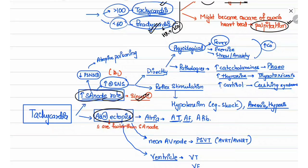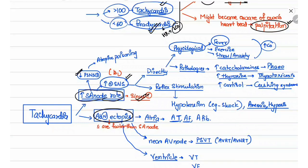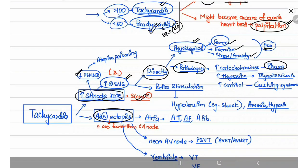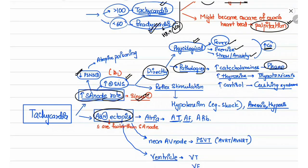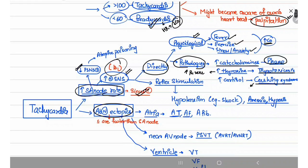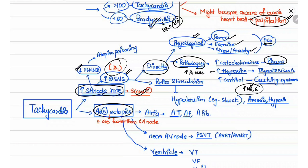Sinus tachycardia can occur due to increased sympathetic stimulation or decreased parasympathetic activity. Decreased parasympathetic activity can occur due to atropine poisoning. Increased sympathetic activity can occur in physiological conditions like fever, exercise, stress, or anxiety. In pathological conditions, it can occur in pheochromocytoma, where increased epinephrine leads to increased stimulation of beta-1 receptors; in thyrotoxicosis, where increased thyroxine increases the sensitivity of beta-1 receptors; or in Cushing's syndrome, where increased cortisol is associated with increased production of norepinephrine and epinephrine.